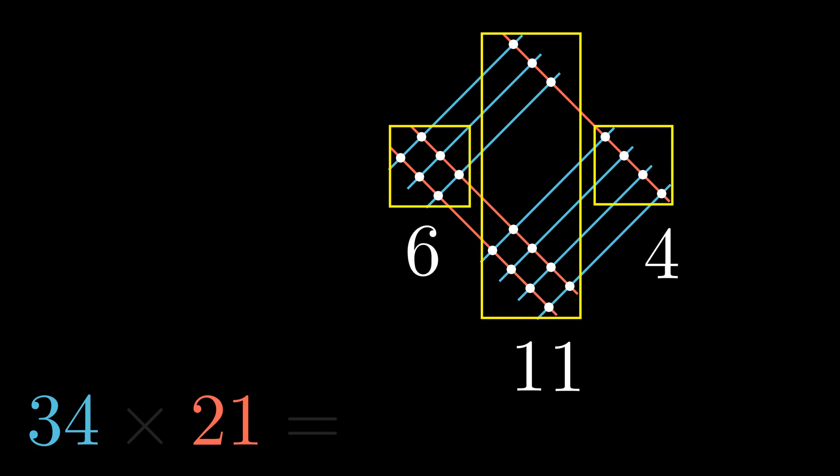Just like we do in normal addition, the tens digit must be carried over to the next column and added to number six, hence the product of 34 and 21 is 714.